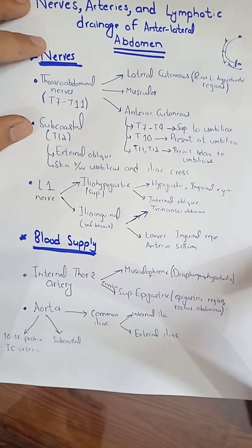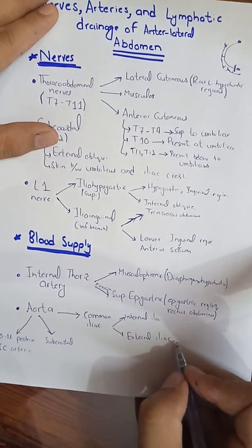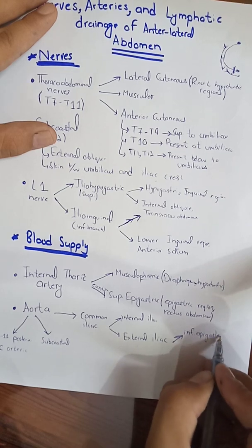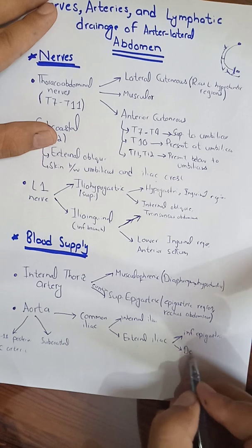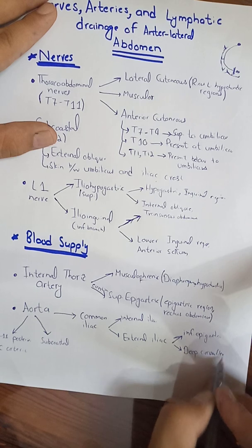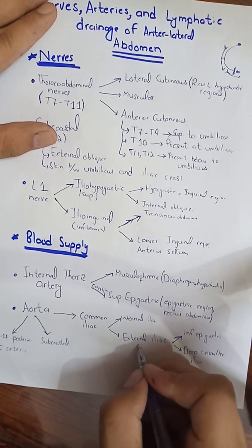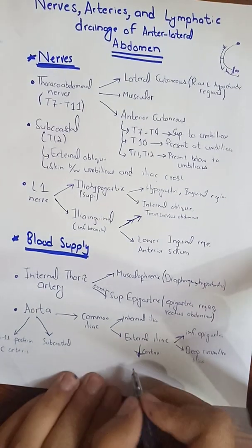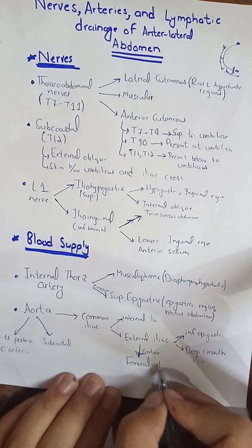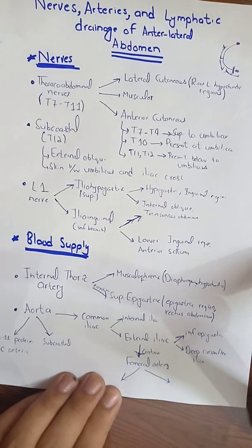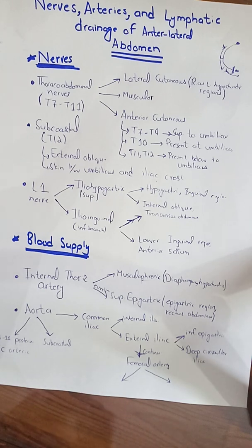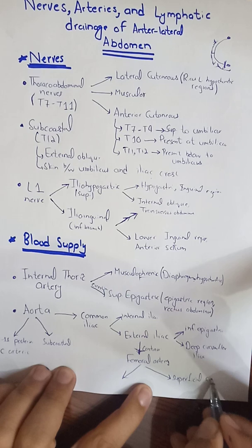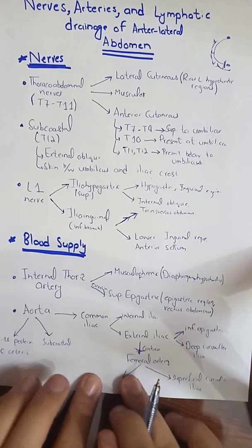The external iliac artery gives two branches: the inferior epigastric artery and the deep circumflex iliac artery. The external iliac artery then continues, and after crossing the inguinal ligament it becomes the femoral artery. The femoral artery also contributes two branches to the abdomen: the superficial circumflex iliac artery and the superficial epigastric artery.